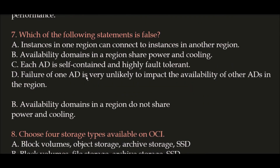Question 7: Which of the following statements is false? Option A: Instances in one region can connect to instances in another region. Option B: Availability domains in a region share power and cooling. Option C: Each availability domain is self-contained and highly fault tolerant. Option D: Failure of one availability domain is very unlikely to impact the availability of other availability domains in the region. The false statement is Option B — availability domains in a region do not share power and cooling.